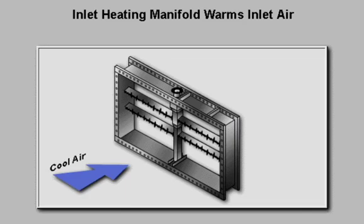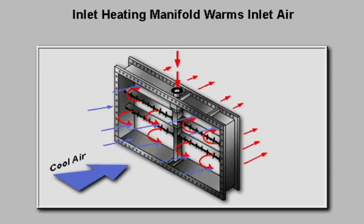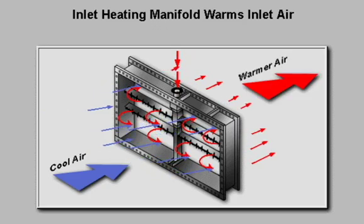The inlet heating manifold consists of a central vertical pipe with pairs of distribution tubes extending horizontally to both sides. During cold ambient conditions, compressor bleed air is forced through the distribution tubes into the inlet air stream. This warms the inlet air and prevents the formation of ice on the inlet guide vanes.